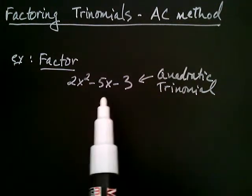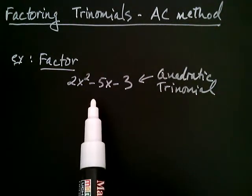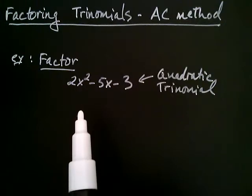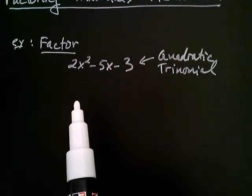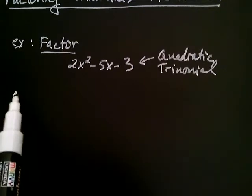We're going to use a method called the AC method that's going to allow us to factor this systematically. Now, we're going to start off with an observation. Let's go ahead and observe.